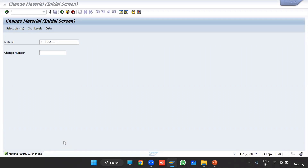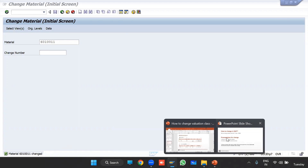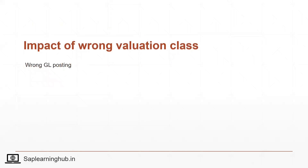Let's see what is the impact of a wrong valuation class. For this you should know the OBYC settings and have knowledge of automatic account determination. In simple words: if the valuation class is wrong and you are performing subcontracting procurement, consignment procurement, stock transfer, transfer posting, goods receipt, or goods issue where stock valuation occurs — all accounting entries will be posted to the wrong GL account. That is why the valuation class must be correct. For a detailed video on OBYC settings and automatic account determination, mention it in the comments.